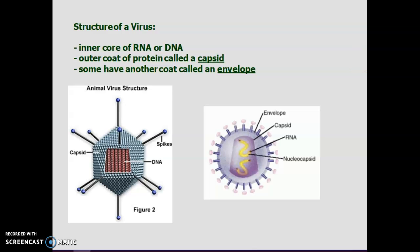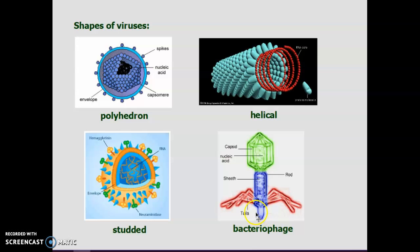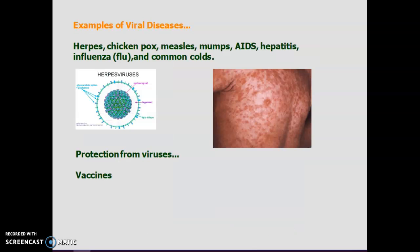It's almost like you wearing a T-shirt and then a sweatshirt and then a jacket. Shapes of viruses — they come in various shapes: polyhedron, which just means many-sided; helical, because it looks like a slinky; studded, almost like those bracelets or dog collars; and then bacteriophage, which looks like a tiny little robot. This is a virus that attacks bacteria, so that should tell you how small those bacteria are.